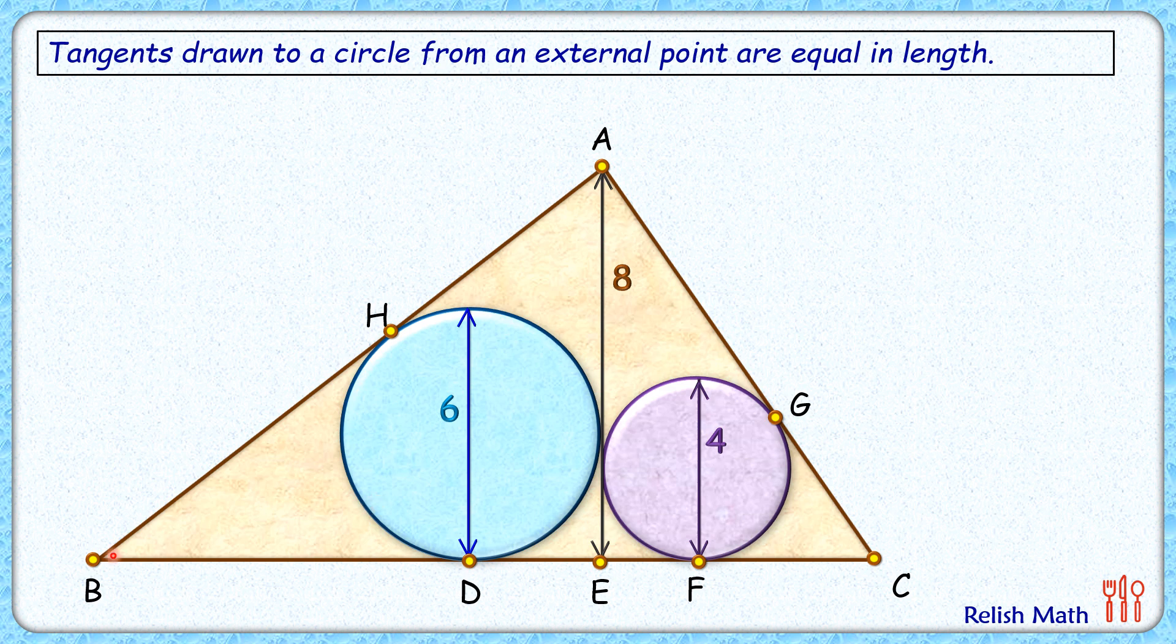For this blue circle, if I draw two tangents from point B, that is BD and BH, they will be equal in length. So if BD length is x cm, then BH length will be the same, x cm.